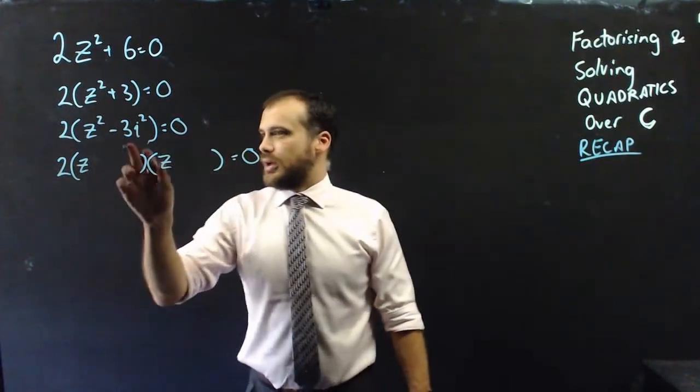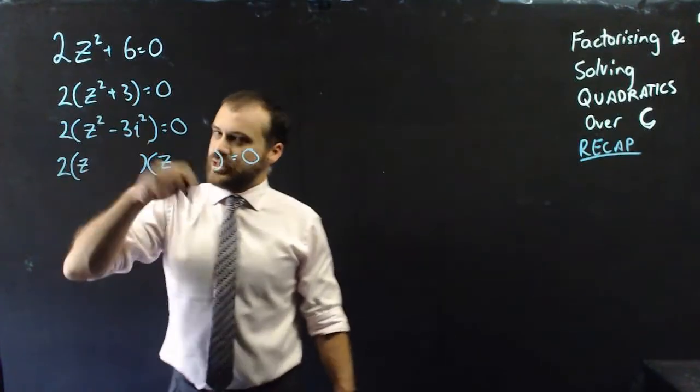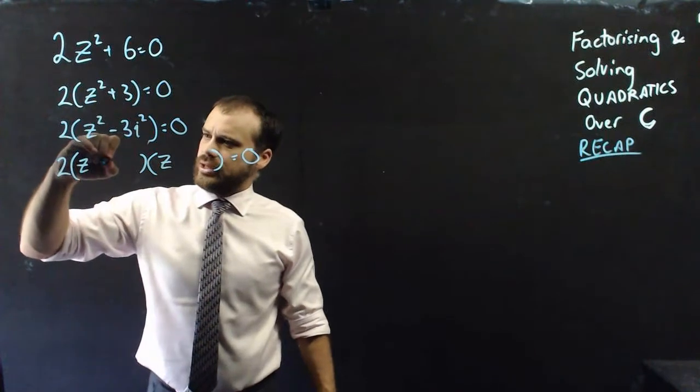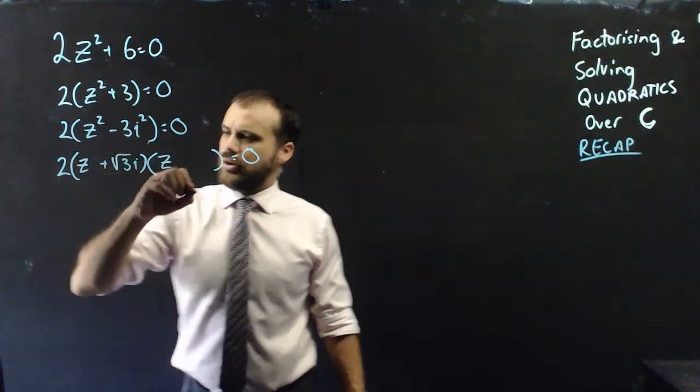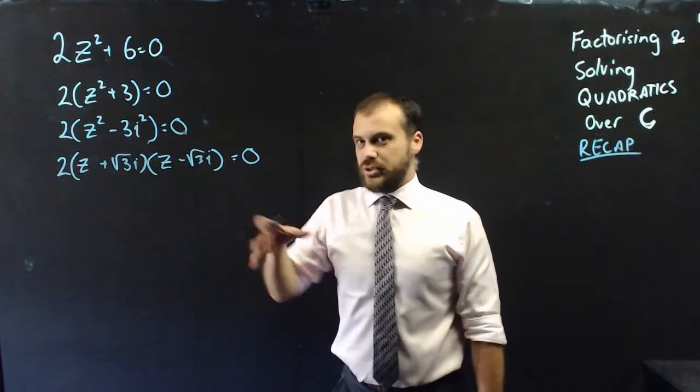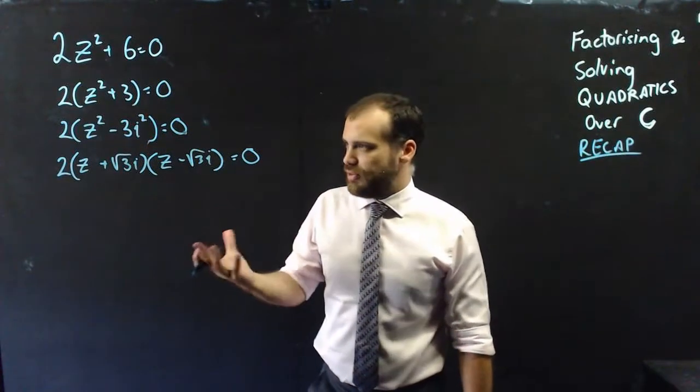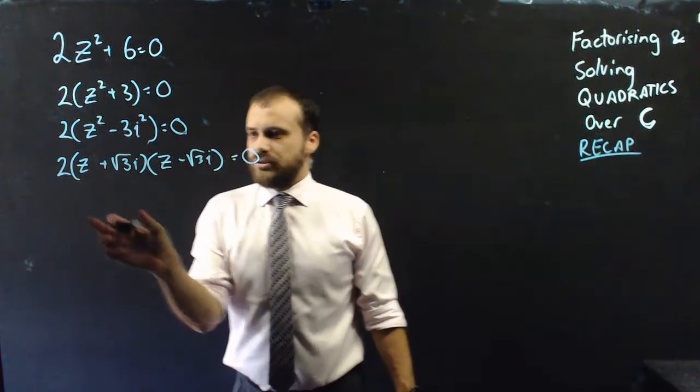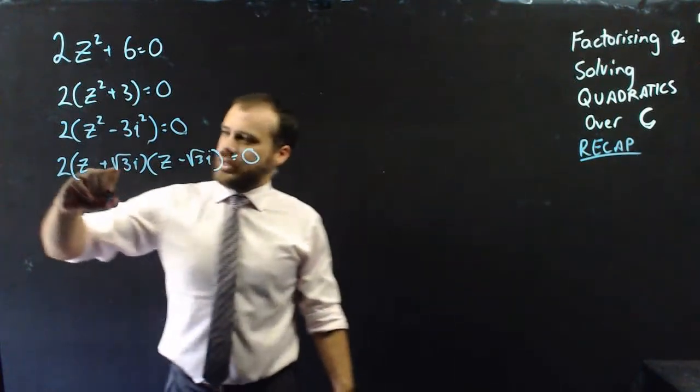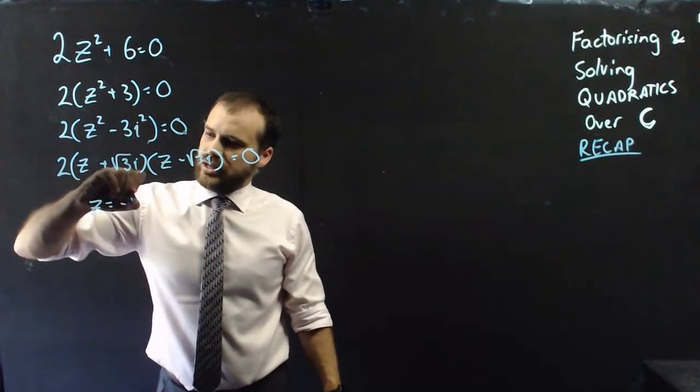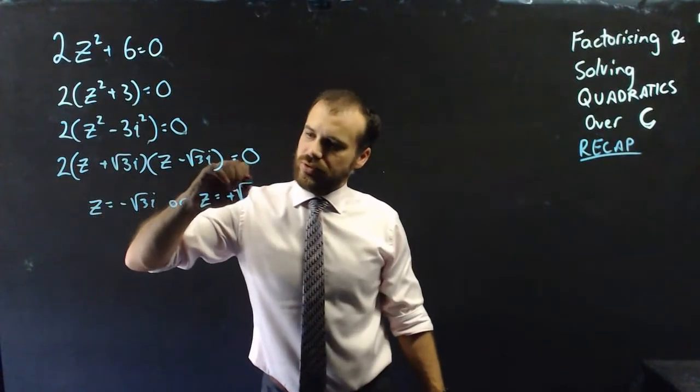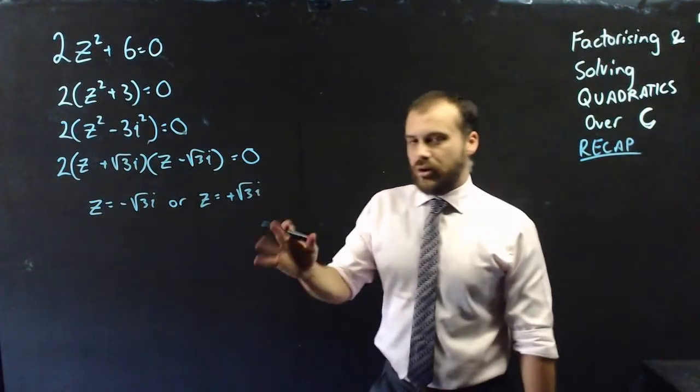z, z. And then that's going to be... You need to think about it a little bit. You need to root that. So it's going to be +√3i and -√3i. And you can null factor law after that. That must equal 0, or that must equal 0. I'm going to jump through that and just say that z = -√3i or z = +√3i. There are our two solutions to that one.